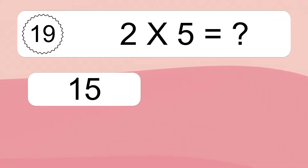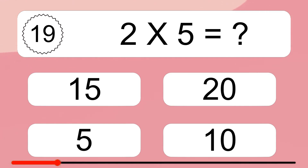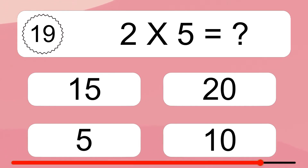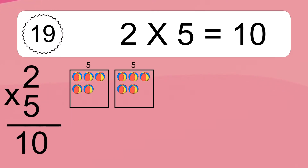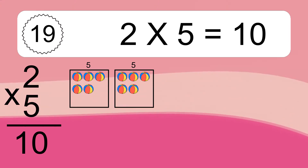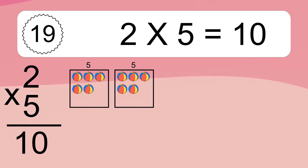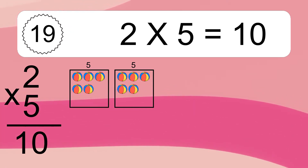Two times five equals what? Two times five equals ten. We have two boxes, and each box has five colorful balls inside. If you count all the balls in all the boxes together, you will have two times five balls. This equals ten balls.